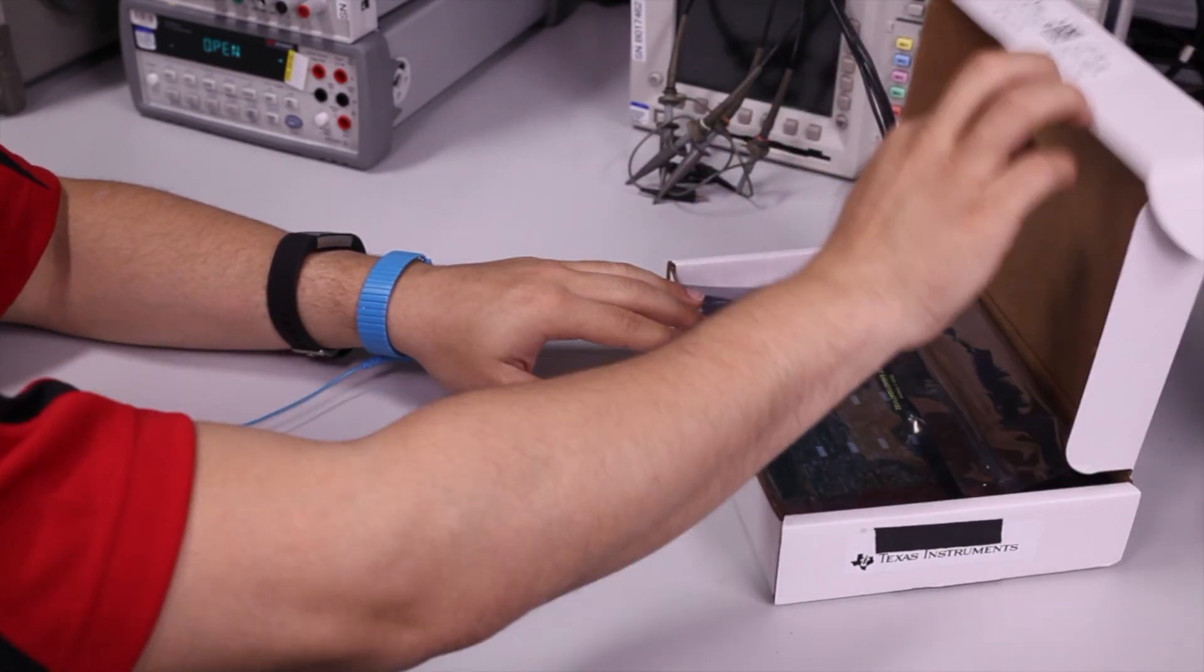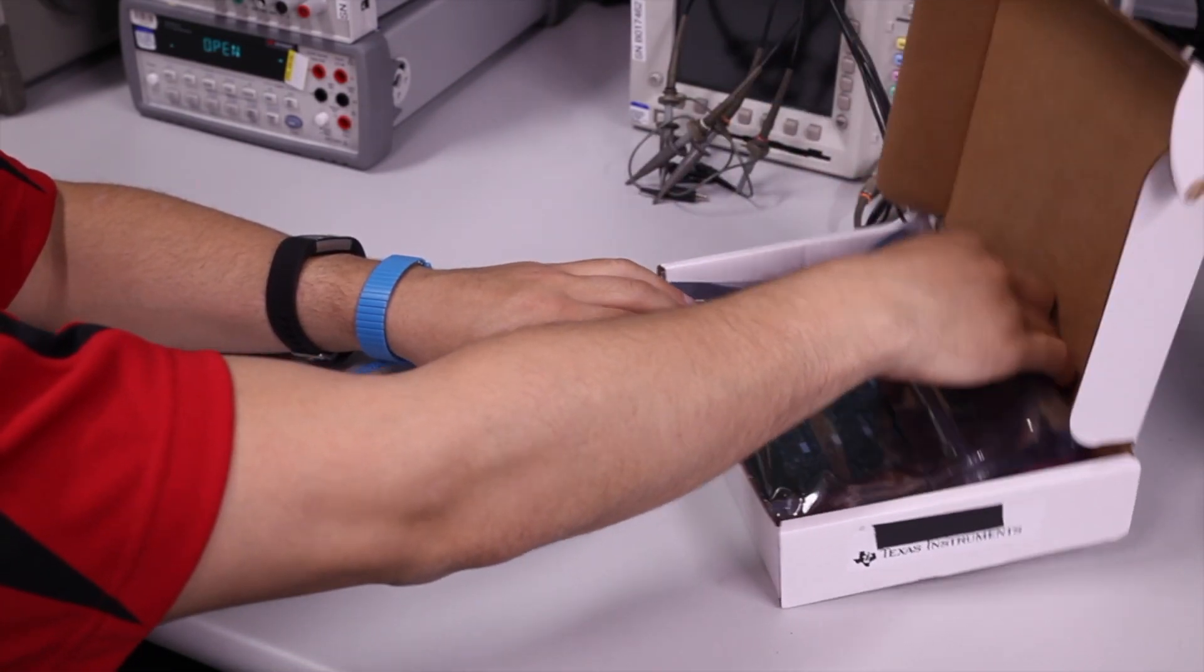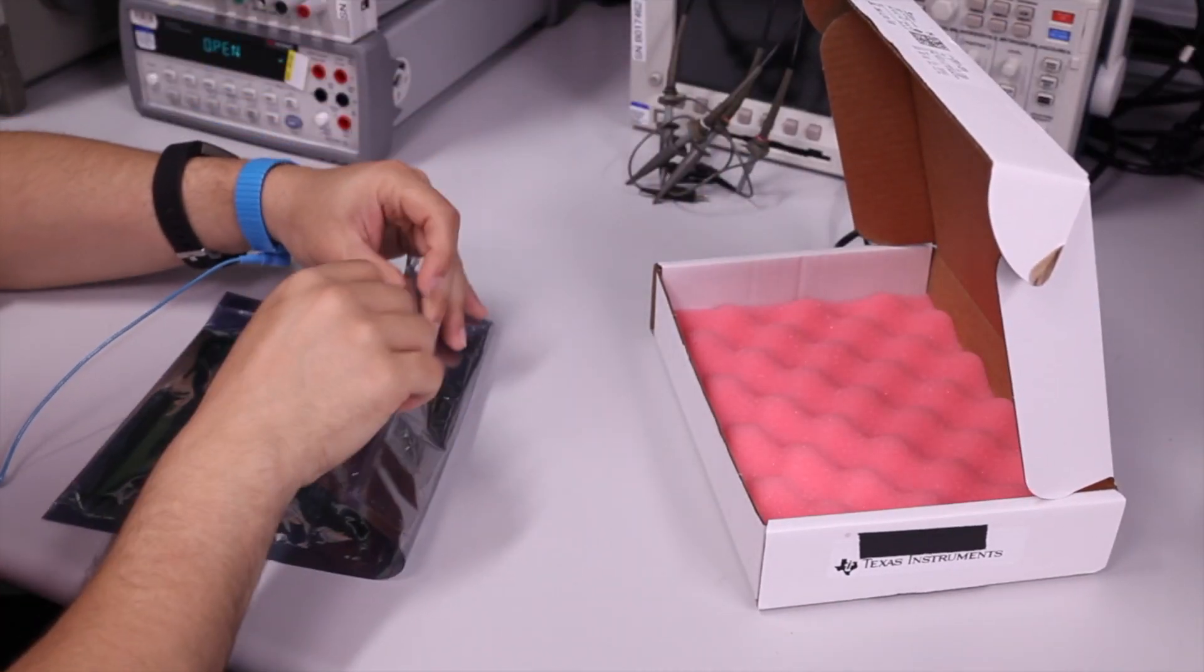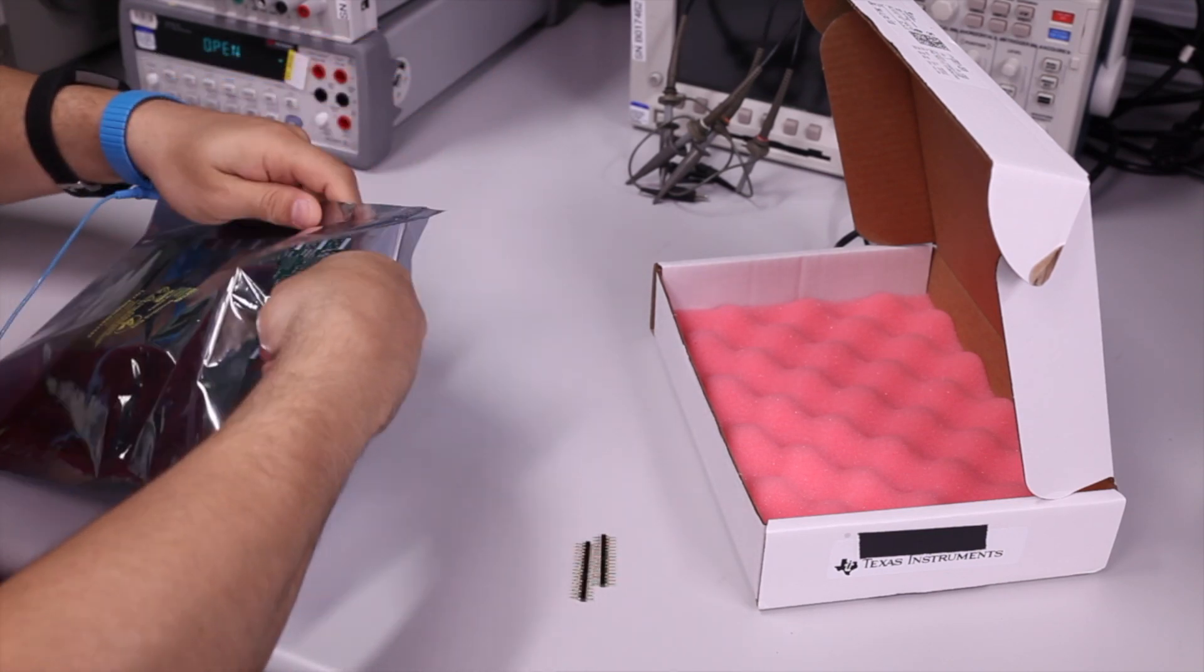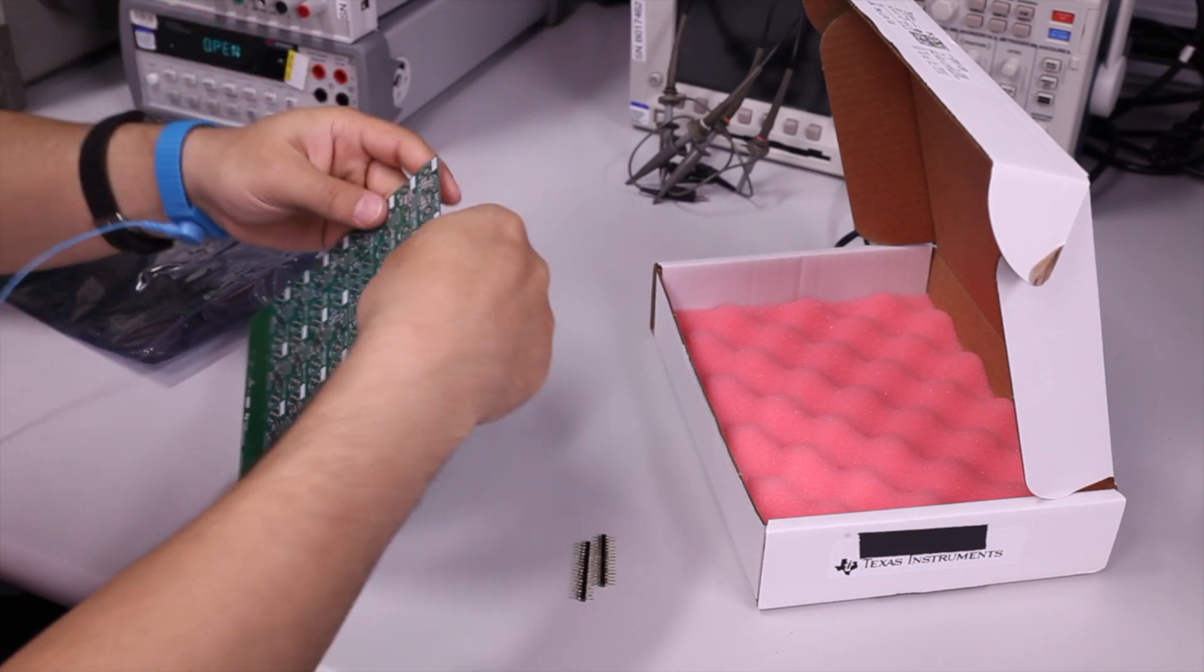When you unpack your DIY Amp EVM, you'll see that it is a 6.5 inch by 6.5 inch board that is made of 32 coupon boards, along with two header strips.